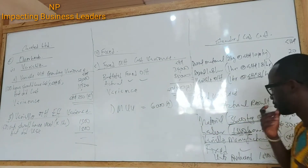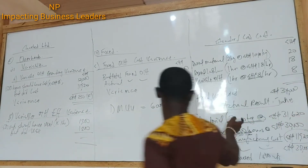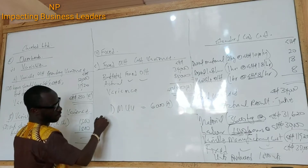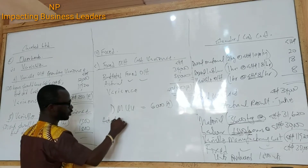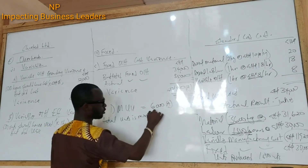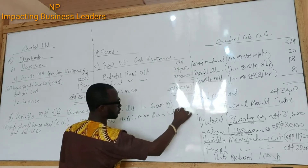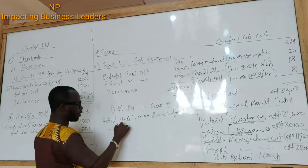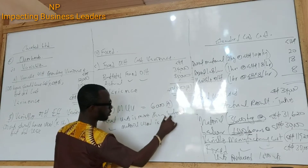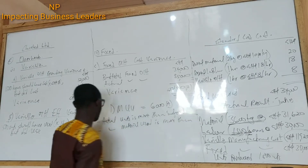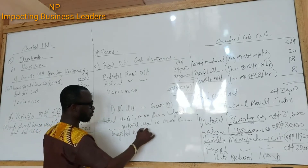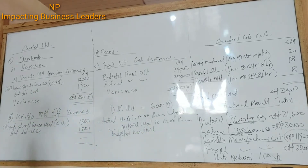We got 6,000 adverse. Why? Because we used more than the standard. So what is the reason for the variance? It could be because actual units is more than budgeted. Another reason we could say is that actual material used is more than budgeted units or budgeted materials. So that's the reason we could give for that one.